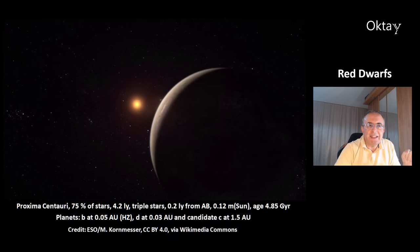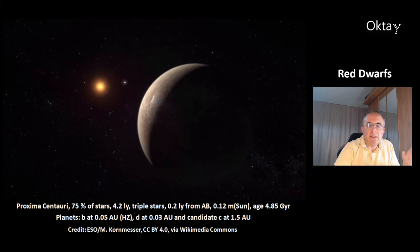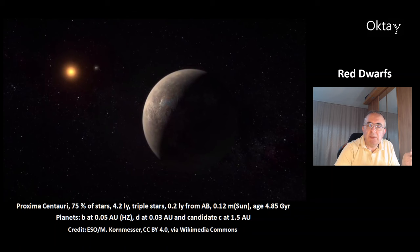Proxima Centauri is located at a distance of 4.2 light years. It is part of a triple star system, and in the background you can see the other two bigger stars of the system. Proxima Centauri is about 0.2 light years away from those two stars. It has a mass of 12% of the sun, and its age is 4.85 billion years, which is about one quarter billion years more than the sun's age.